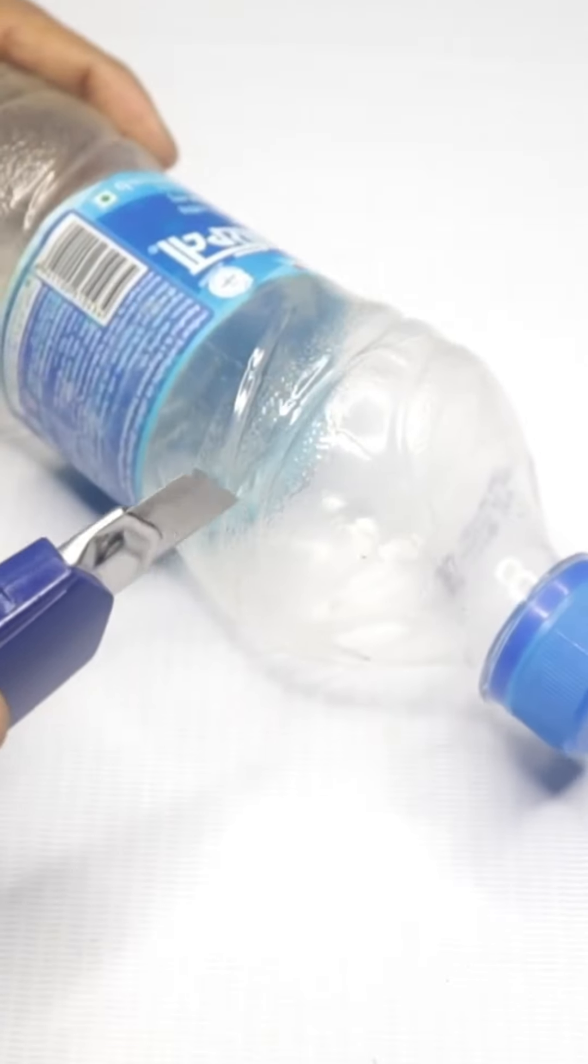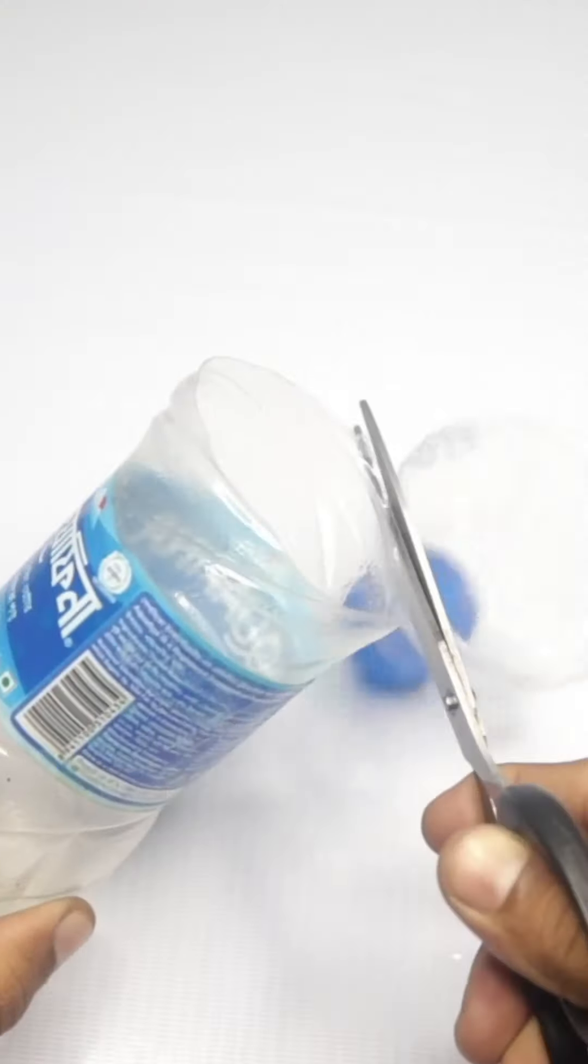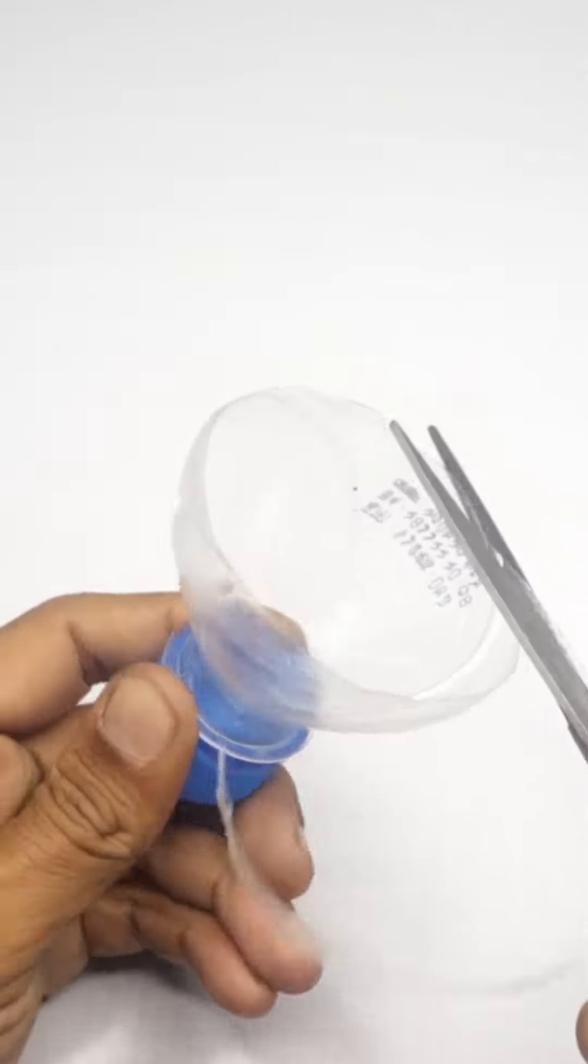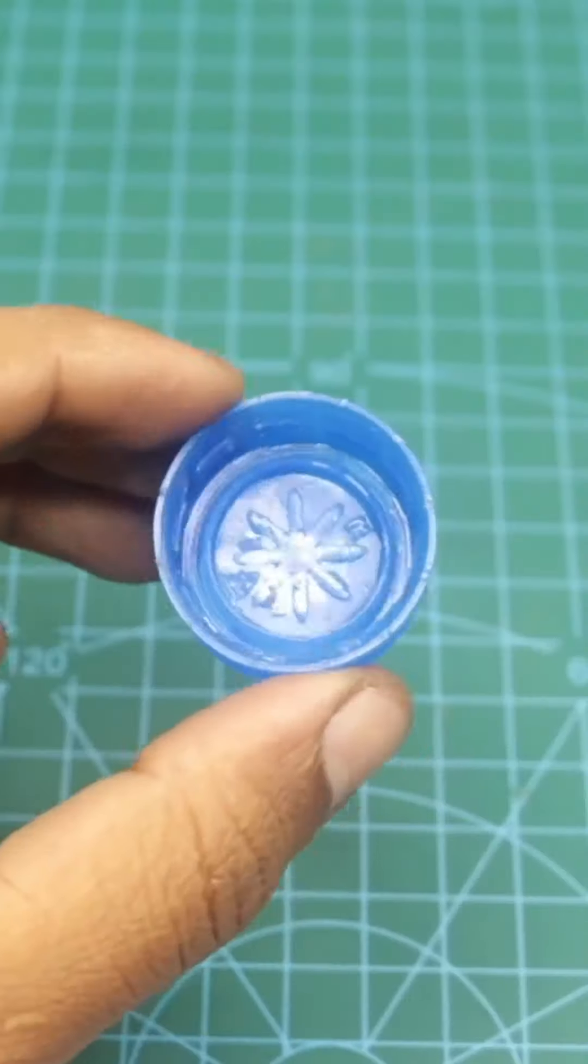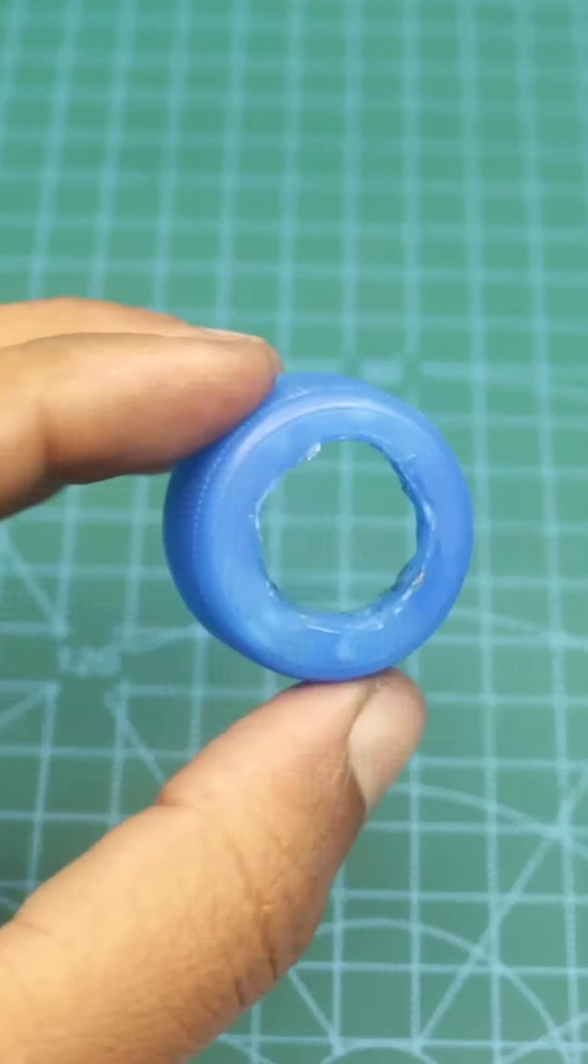Take a bottle and make a cut at the top. Then trim the edges to give it shape. Remove the lid and carefully make a hole in the bottom using a hot welder.